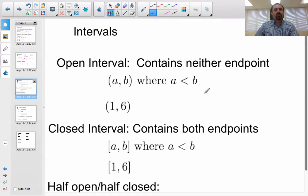Intervals. This is going to be really important in calculus. We're going to be talking about open and closed intervals. So, an open interval is pretty simple. It's an interval that contains neither endpoint. So, from A to B, where A has to be less than B for this to make sense, we use these soft parentheses. 1 to 6, this would contain all the numbers between 1 and 6, but not 1 and not 6.